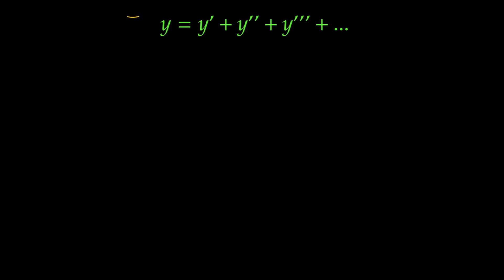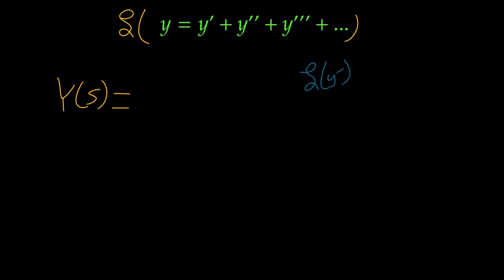Taking the Laplace transform of both sides — denoting that using an L that I can actually write — using that L right there, we have just the Laplace transform of Y on the left-hand side. But on the right-hand side we have something a little more interesting. You might recall that the Laplace transform of Y prime is just equal to S times Y, minus Y of zero.